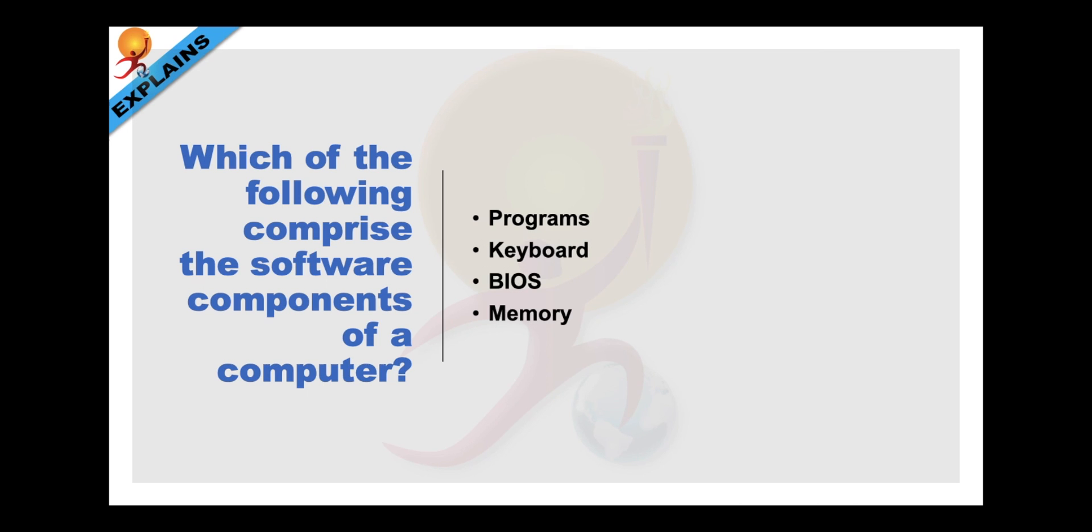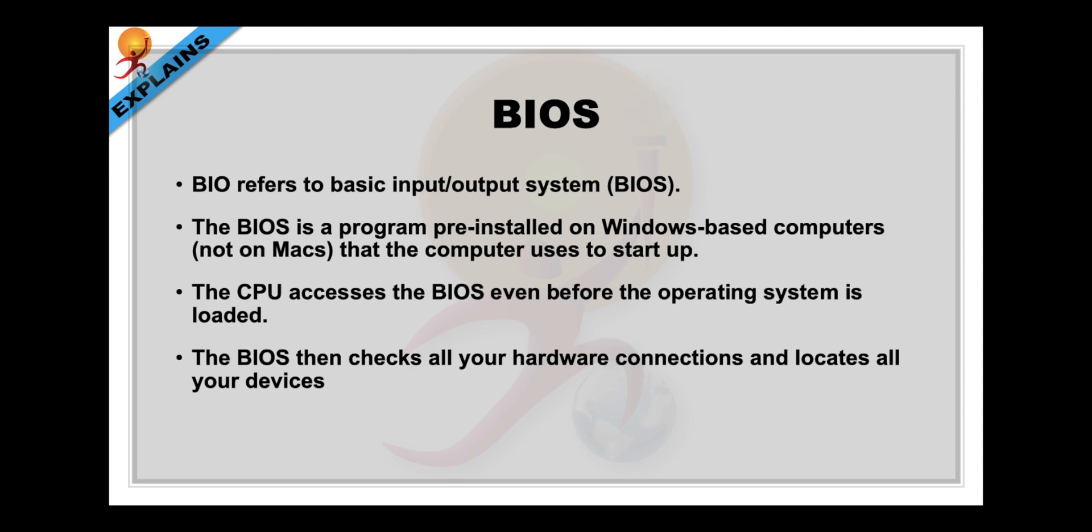Which of the following comprise the software components of a computer? Program, keyboard, BIOS and memory. Let us look at what is a BIOS. BIOS refers to basic input-output systems. And hence the acronym BIOS. BIOS basically is a program pre-installed on Windows based computers and not on Macs. Macs have a little different way. That the computer uses to start up. The CPU accesses the BIOS even before the operating system is loaded. The BIOS then checks all your hardware connections and locates all your devices.